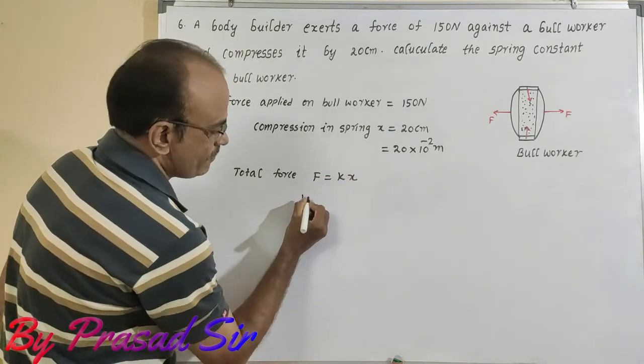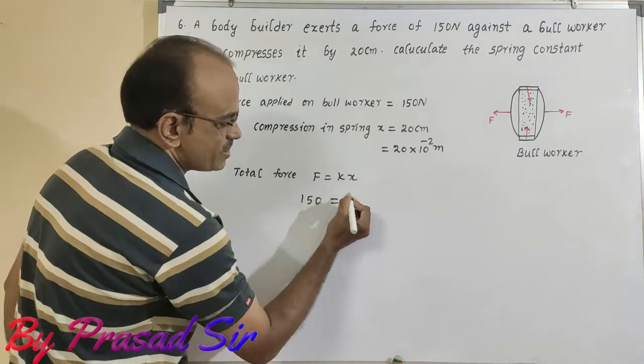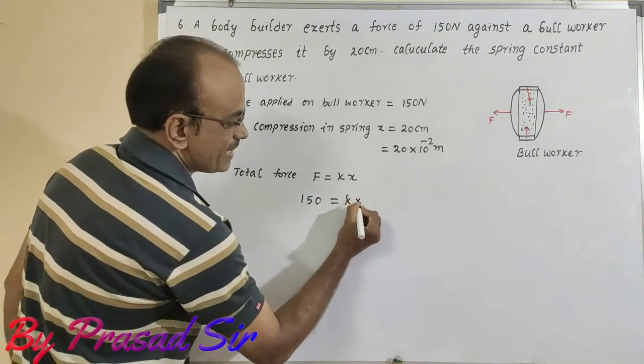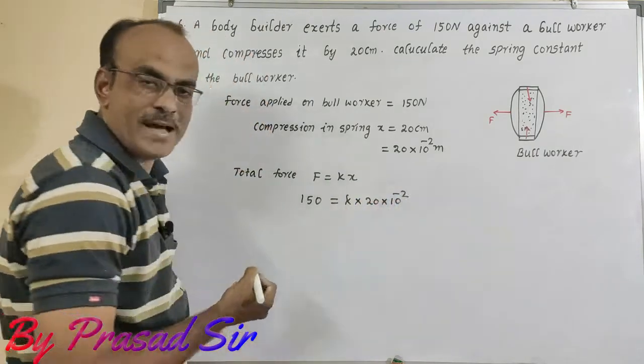What is F here? 150 is equal to spring constant, that is k, into x, that is 20 into 10 to the power of minus 2.